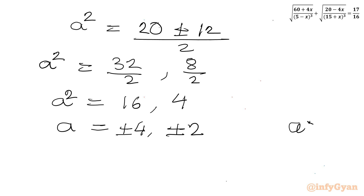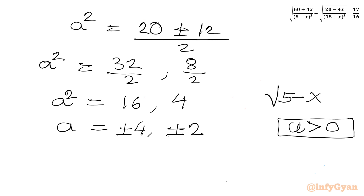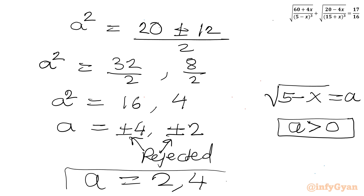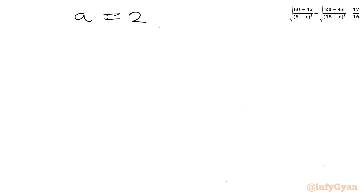But the condition on a: a must be positive. A was our substitution, square root of (5 minus x), so a must be positive. So we will reject the minus sign values. Accepted values are a equal to 2 and a equal to 4.